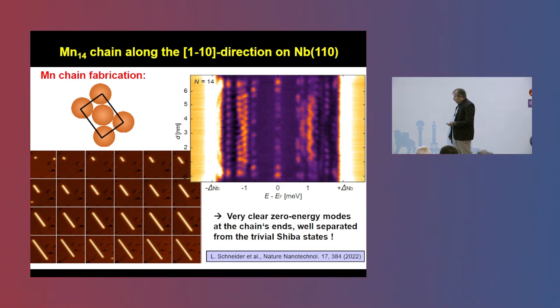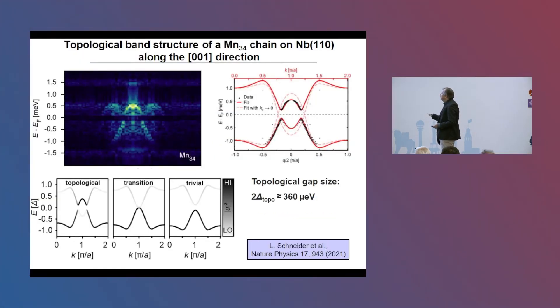As I explained on Monday, we do this by Bogoliubov quasiparticle interference and Fourier transformation afterwards. And so, we could really map out for the very first time the in-gap band topology inside the gap of a superconductor.